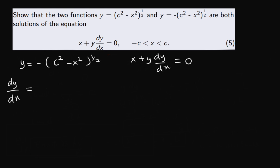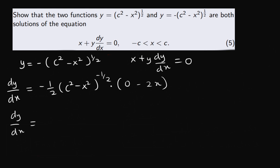dy over dx equals minus half multiplying c squared minus x squared to the power of minus half, times the derivative of what is inside. c squared is just a constant, so its derivative is zero minus 2x. When we simplify, we have minus minus 2x divided by 2, multiplying c squared minus x squared to the power of minus half. The two minuses cancel, giving 2x over 2, and these twos cancel out.